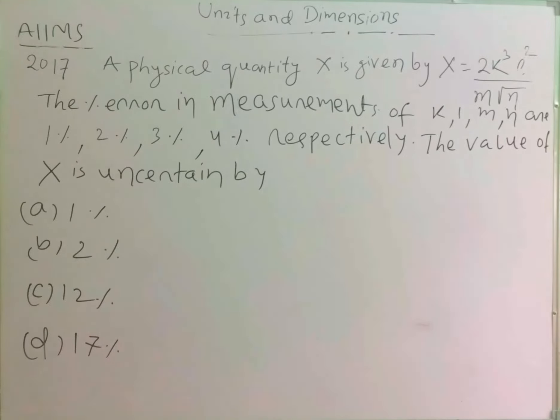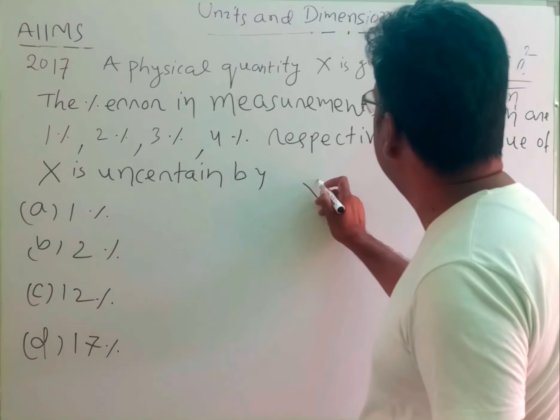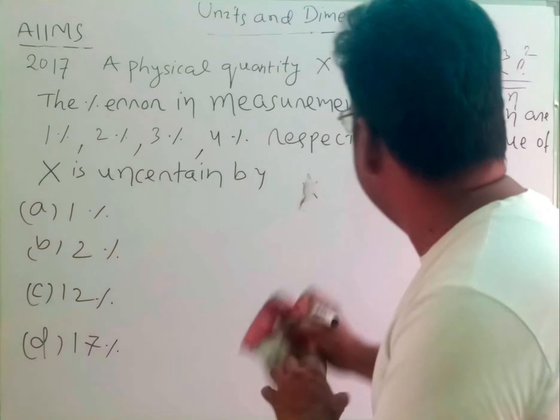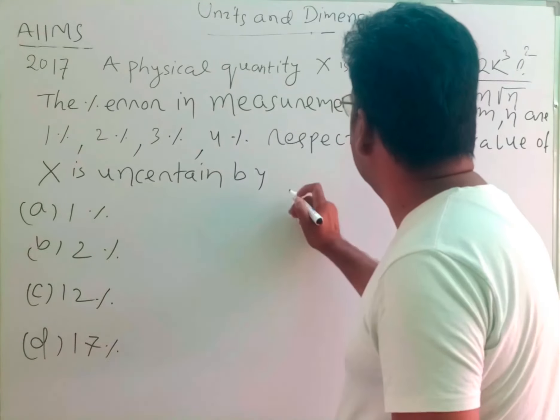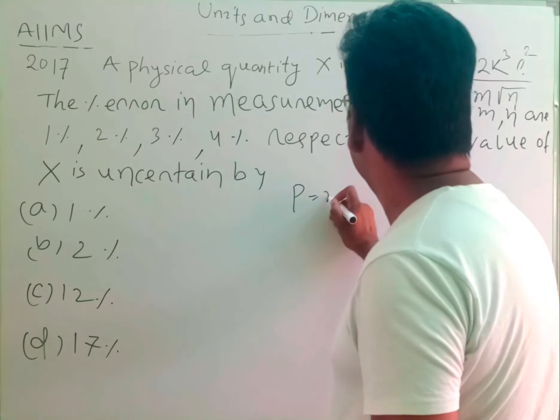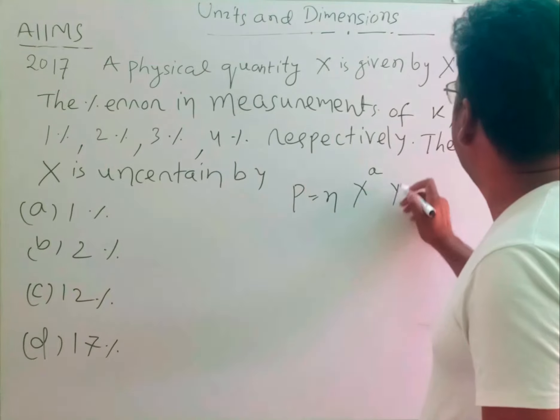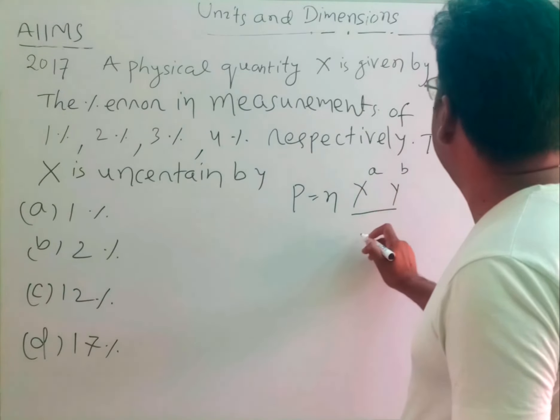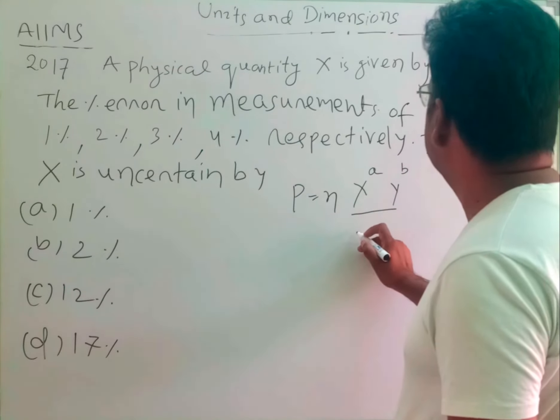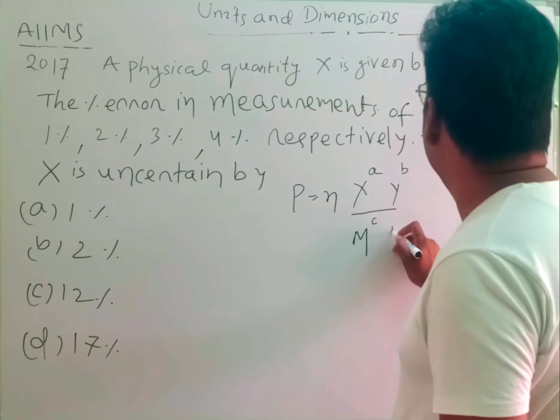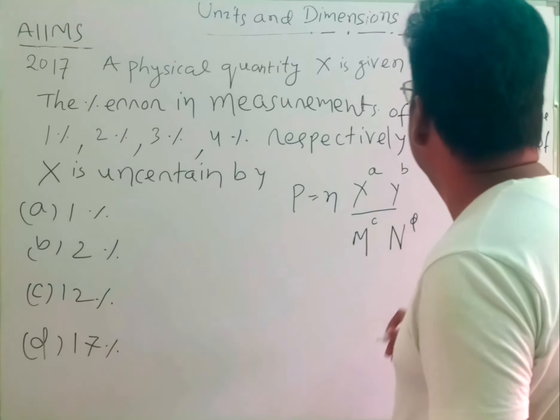The value of X is uncertain by. Okay students, from error analysis we know if any physical quantity, say P, is given by formula η X^A Y^B divided by M^C and N^D. Then,